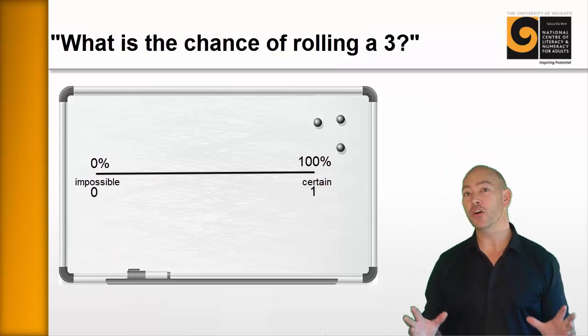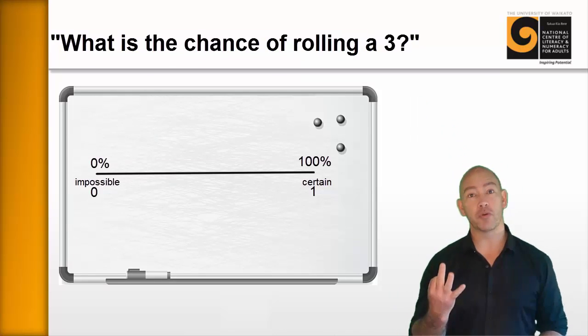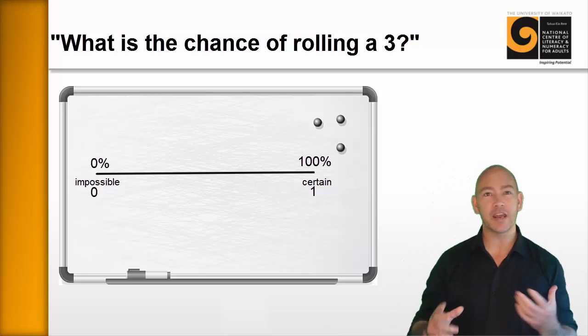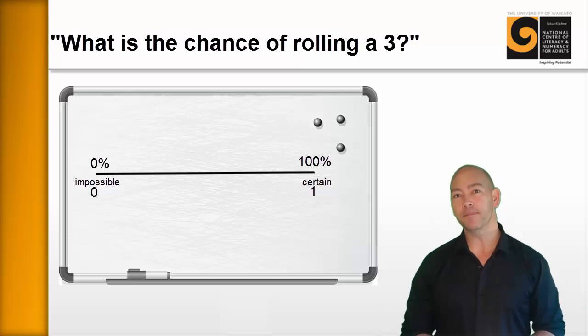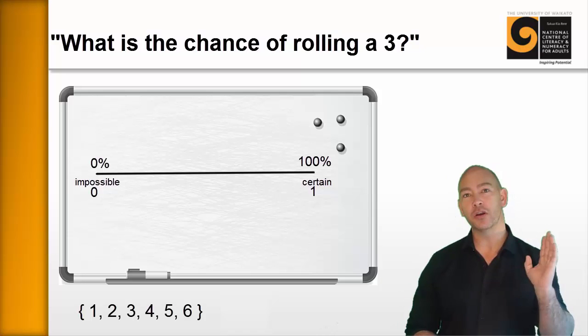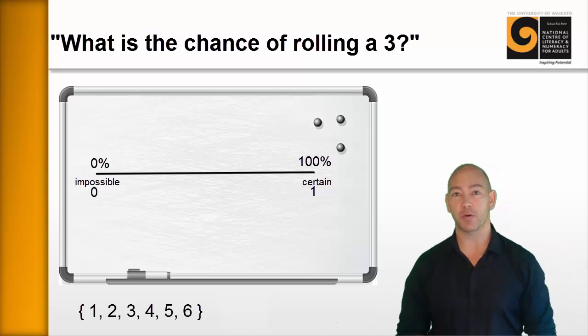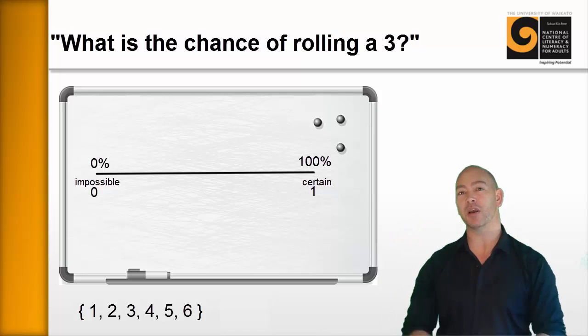So our sample set are the numbers 1 through to 6. Next thing, ask the learners, what are the chances of a 3 being rolled? And let them talk about it and listen to what they say. And then bring them back to the sample set. What's the total number of outcomes possible? Well, there's six possible outcomes.